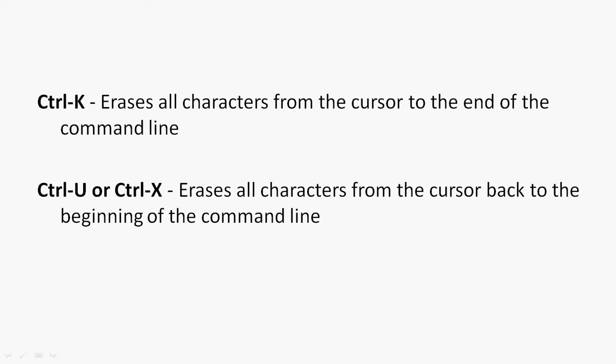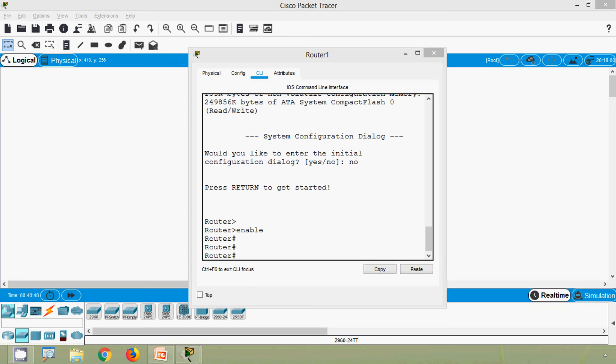Next we will see Ctrl K and Ctrl U or Ctrl X. Ctrl K erases all characters from the cursor to the end of the command line. Ctrl U or Ctrl X erases all characters from the cursor back to the beginning of the command line.